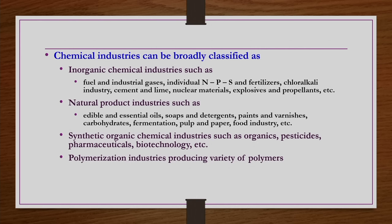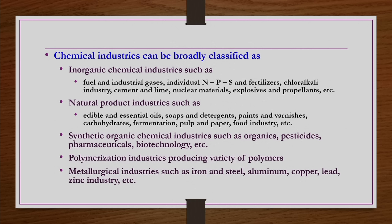Another group is polymerization industries producing a variety of polymers. The last group is metallurgical industries such as iron and steel, aluminum, copper, lead, zinc industry, etc. There may be other industries as well like glass and coating industries, ceramic industries. Our course is on inorganic chemical technology, that is production of inorganic chemicals at industry level. Most of the contents may be covered in the inorganic chemical industries, natural product industry, and a few topics in metallurgical industries. We may also have glass industry and ceramic industry.